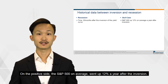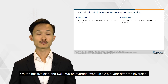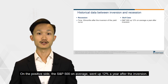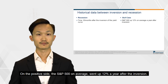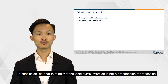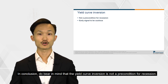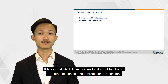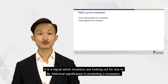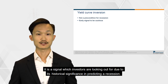On the positive side, the S&P 500 on average went up 12% a year after the inversion. In conclusion, do bear in mind that the yield curve inversion is not a precondition for a recession. It is a signal which investors are looking out for due to its historical significance in predicting a recession.